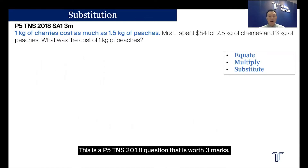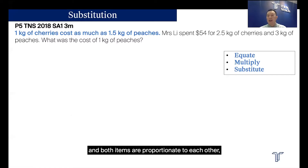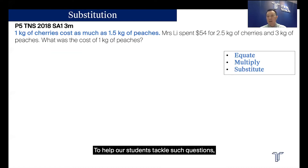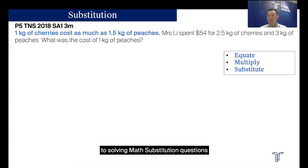This is a P5 Taunan 2018 question worth 3 marks. When I see more than one item — in this case, cherries and peaches — and both items are proportionate to each other, I will identify it as a substitution question type. To help our students tackle such questions, there will be three steps in our EMS framework, and you can see them in the right corner of the slide.